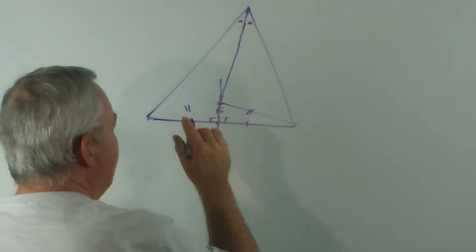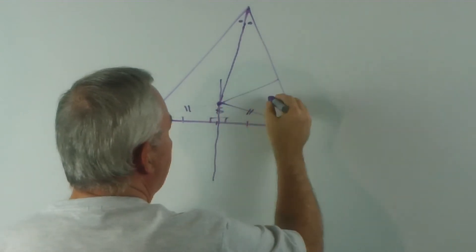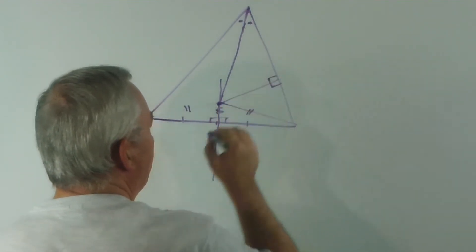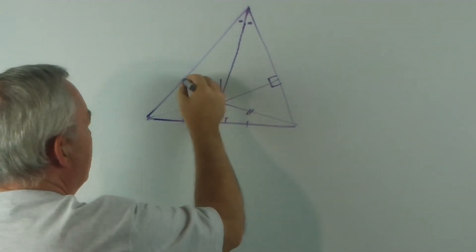Now, the next construction, again from this point, is to drop a perpendicular line to this point. I'll draw a right angle on each side, and a perpendicular line to this side.